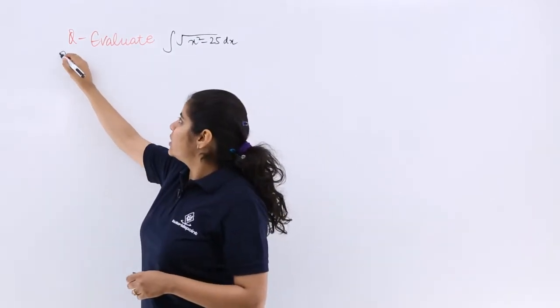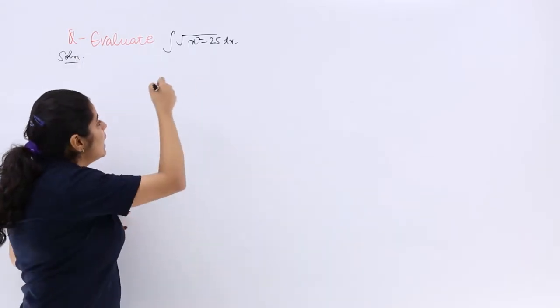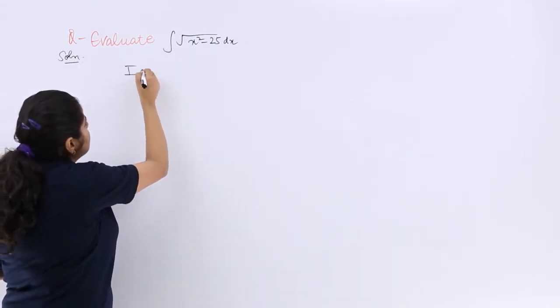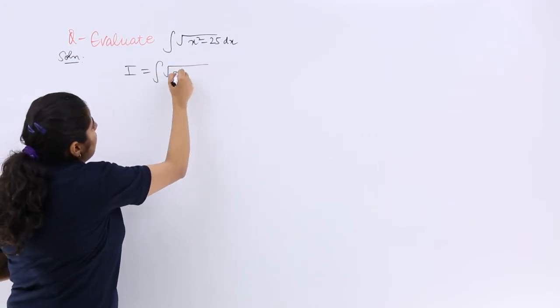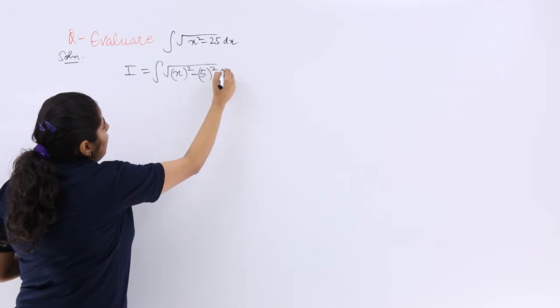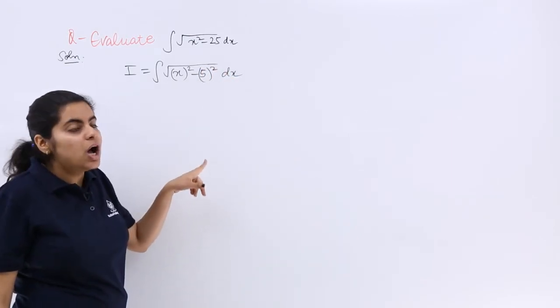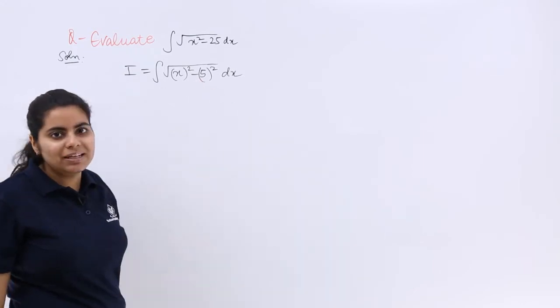So let me write the solution and go about with this question's solution. If I is the given question, it can be written as x square minus 5 square dx. That means I can use the formula of integration of x square minus a square.